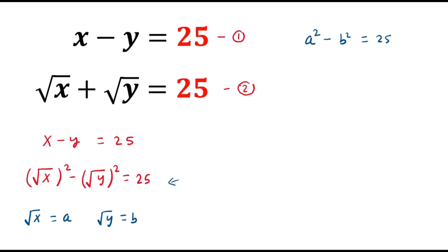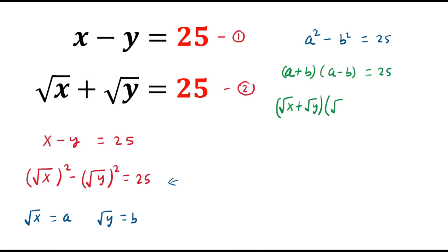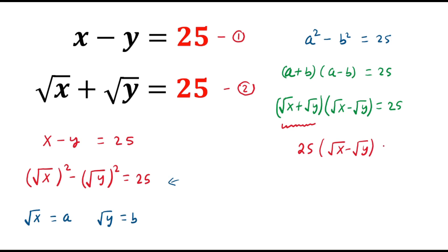In the left hand side we have a difference of two squares, which is same as a plus b times a minus b, and this equals 25. Substituting back: a is square root of x and b is square root of y, so we get square root of x plus square root of y, times square root of x minus square root of y, equals 25. Since square root of x plus square root of y equals 25 from equation two, we replace that with 25, giving 25 times square root of x minus square root of y equals 25.